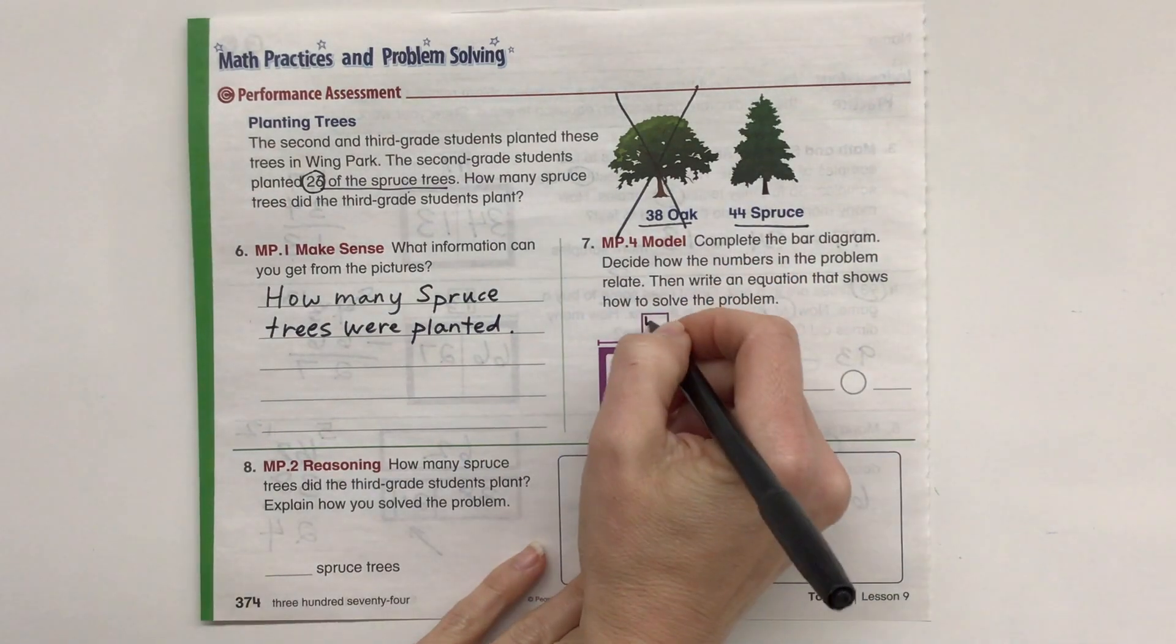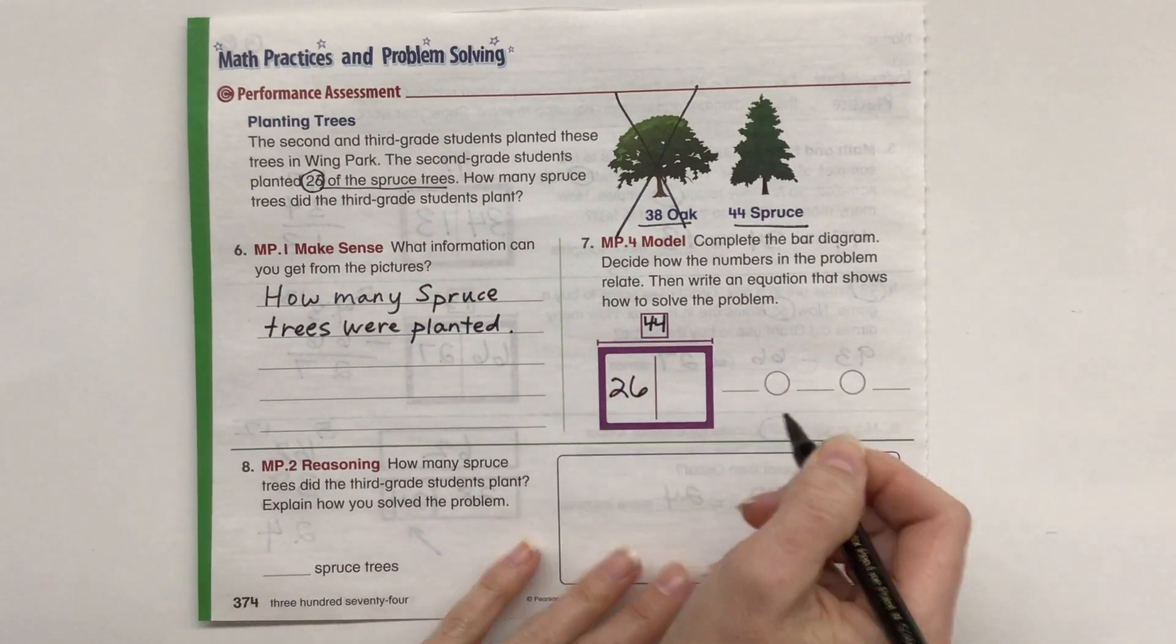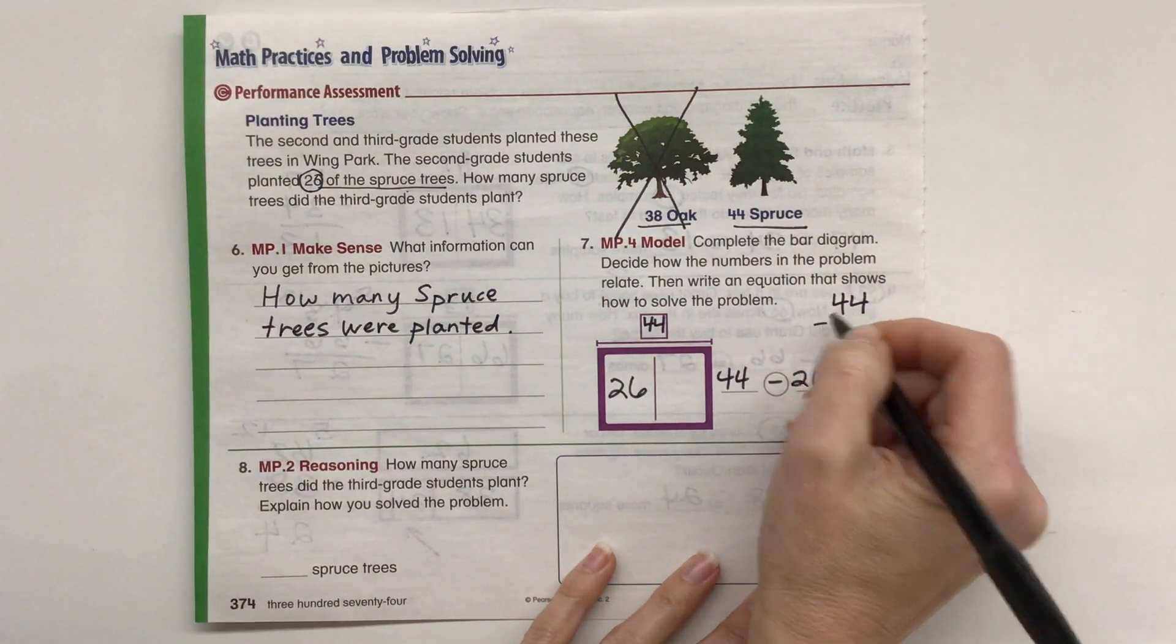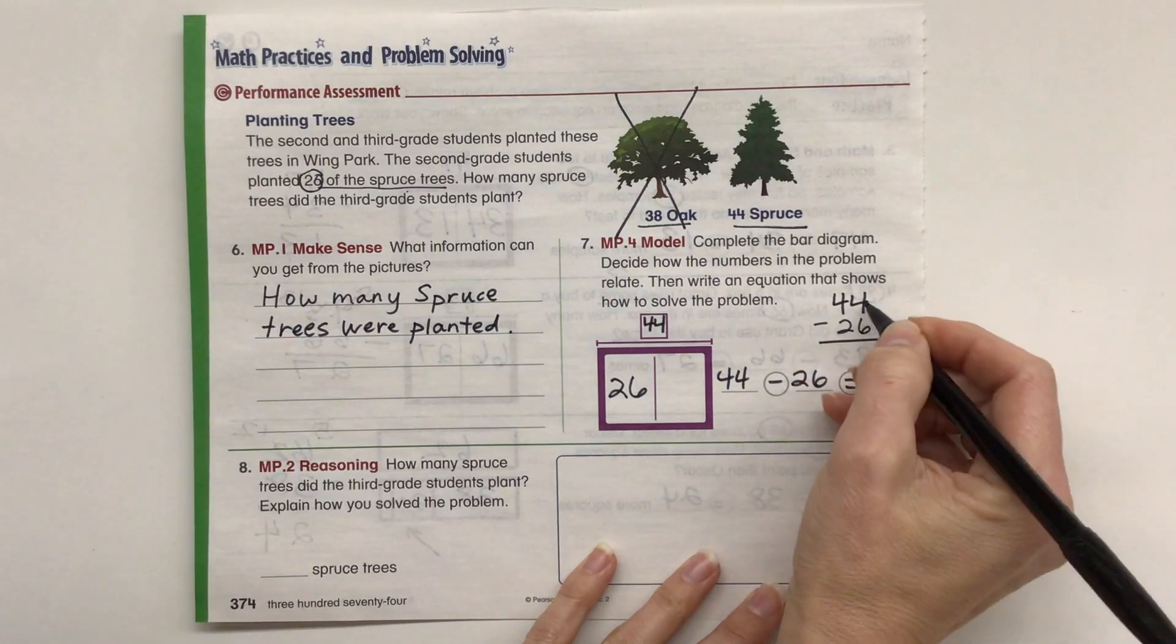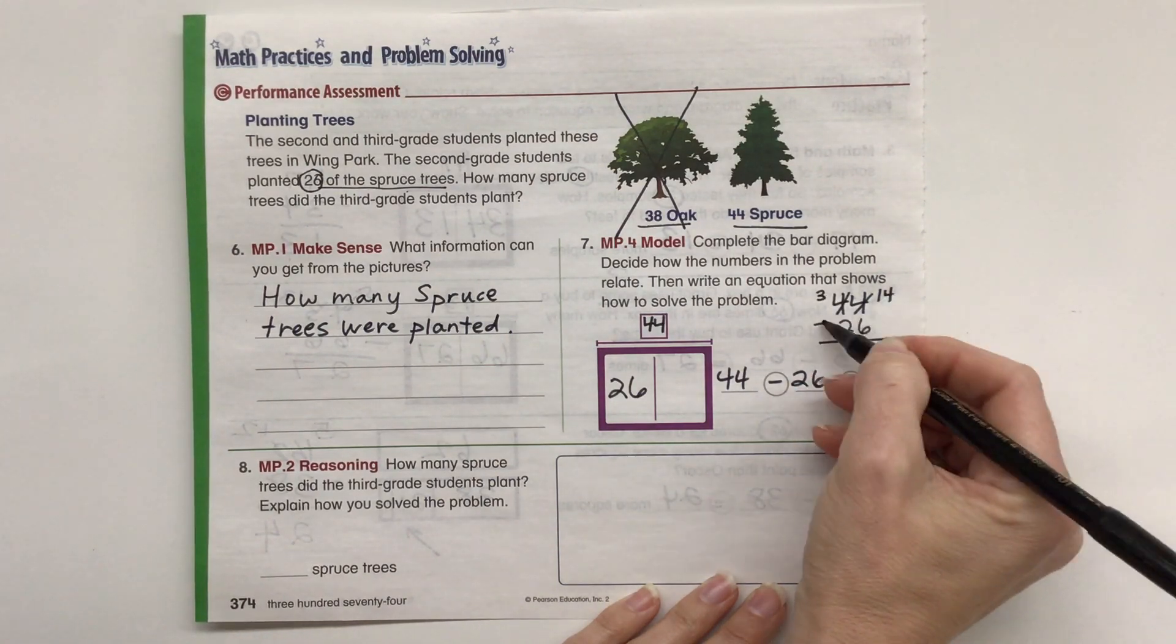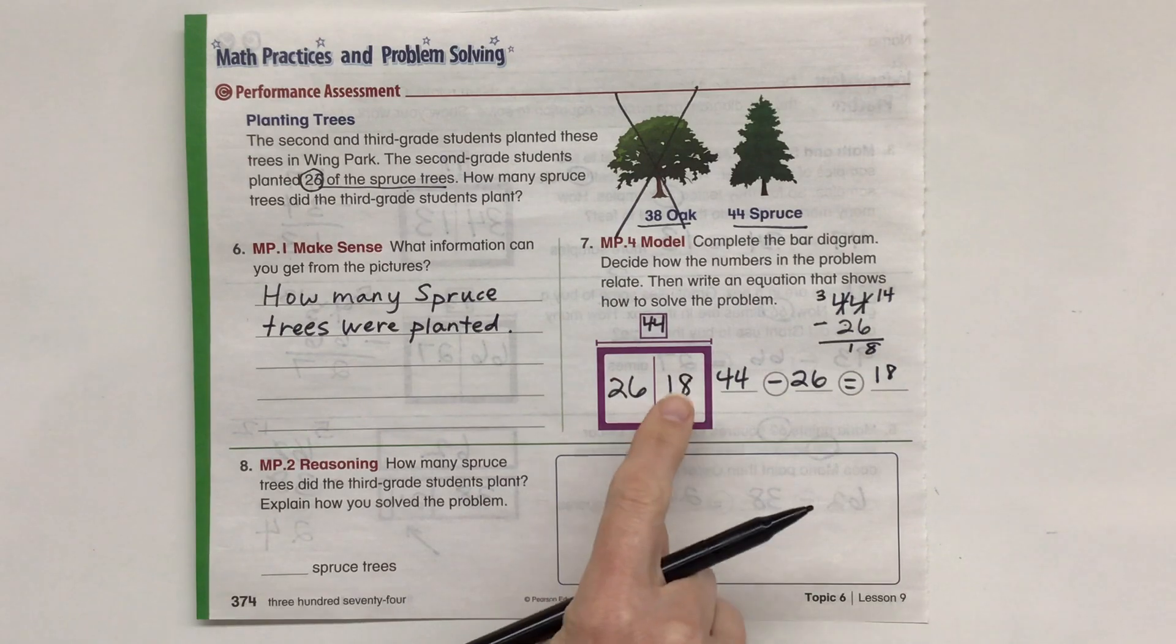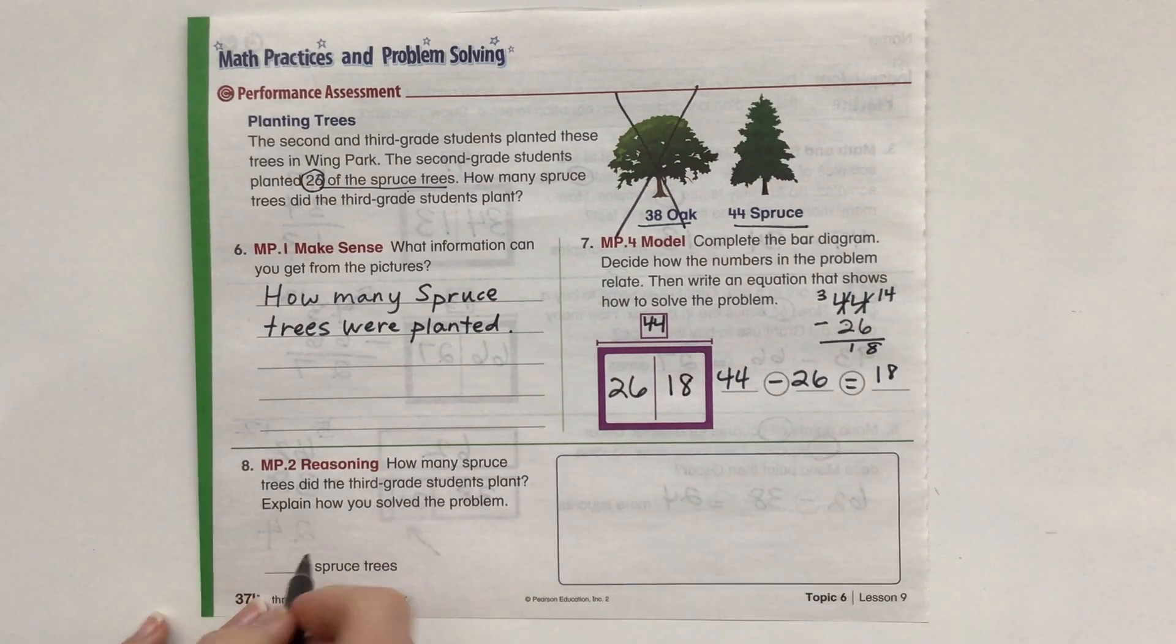So we have 44 total spruce trees. We know that the second grade students planted 26 of them. So 44 minus 26 equals what? So let's figure that out. 44 minus 26 equals, 4 minus 6 doesn't work. We're regrouping 14 and 3. 14 minus 6 is 8, 3 minus 2 is 1.